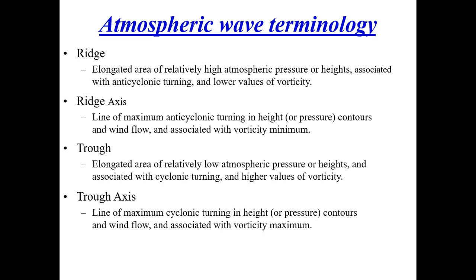The ridge is associated with a vorticity minimum. A trough, on the other hand, is an elongated area of relatively low atmospheric pressure or heights, associated with cyclonic turning — the opposite of a ridge. It has higher values of vorticity, sometimes known as positive vorticity. The trough axis is the line of maximum cyclonic turning, and it is associated with a vorticity maximum or positive vorticity.